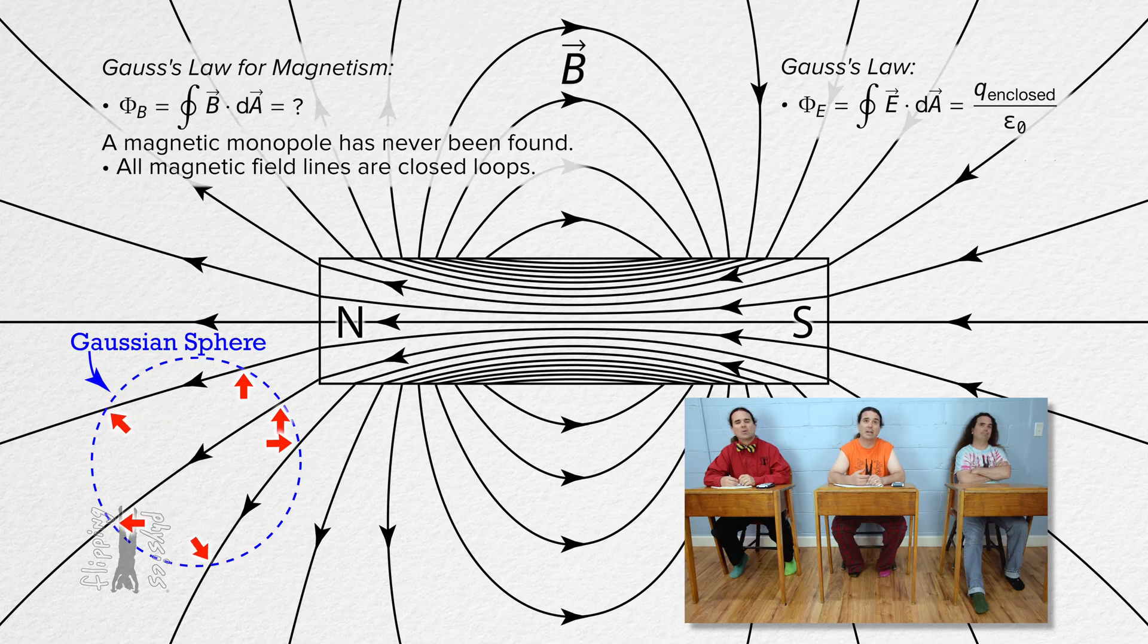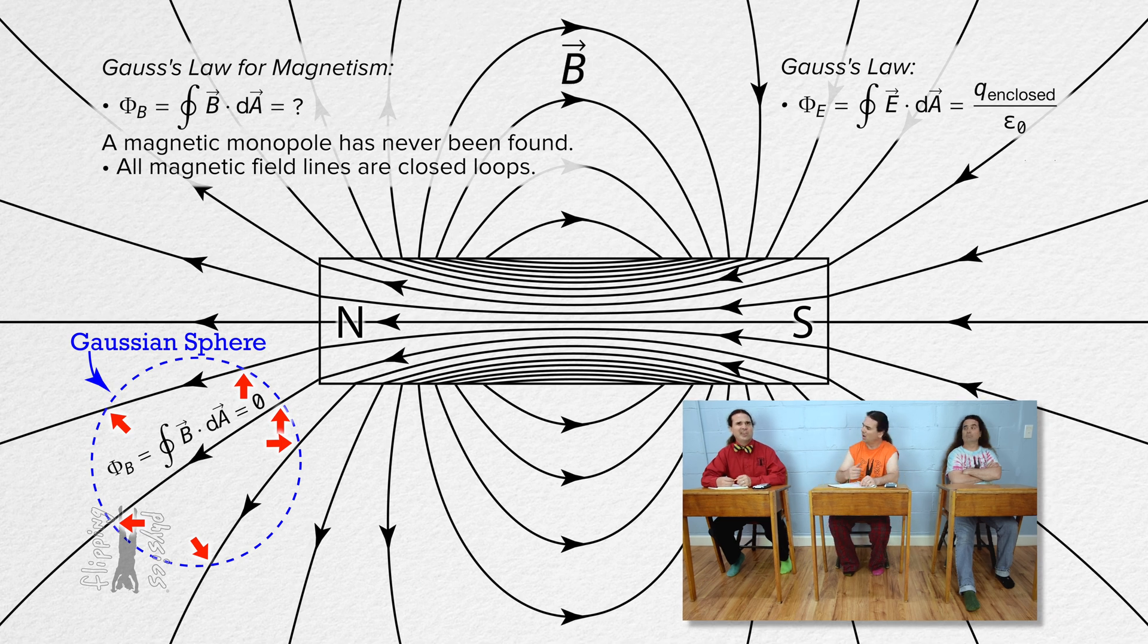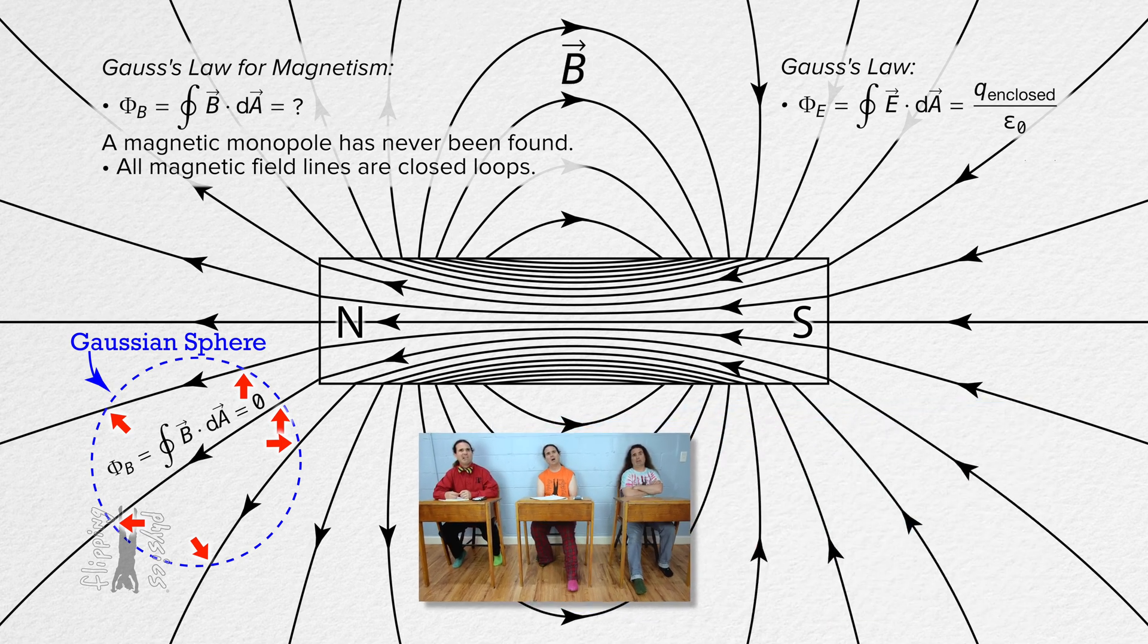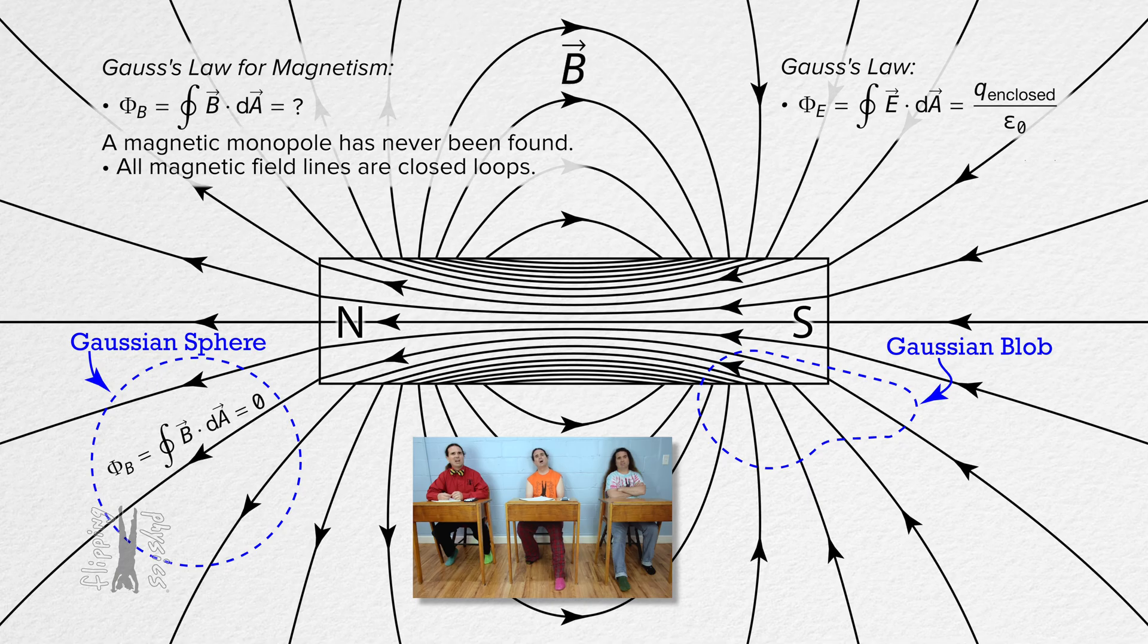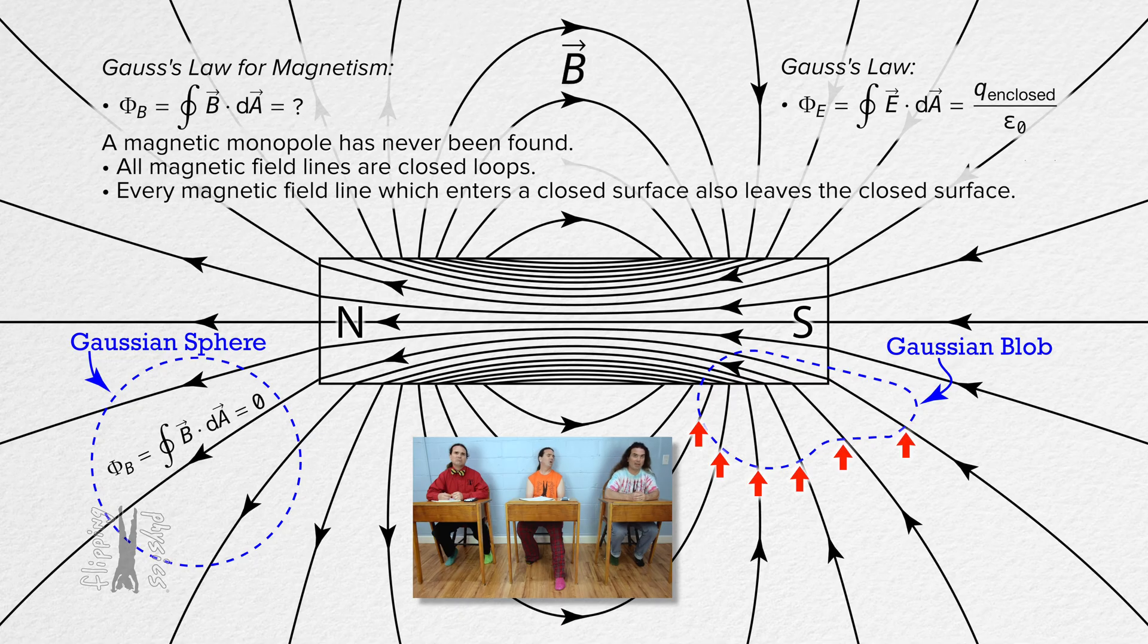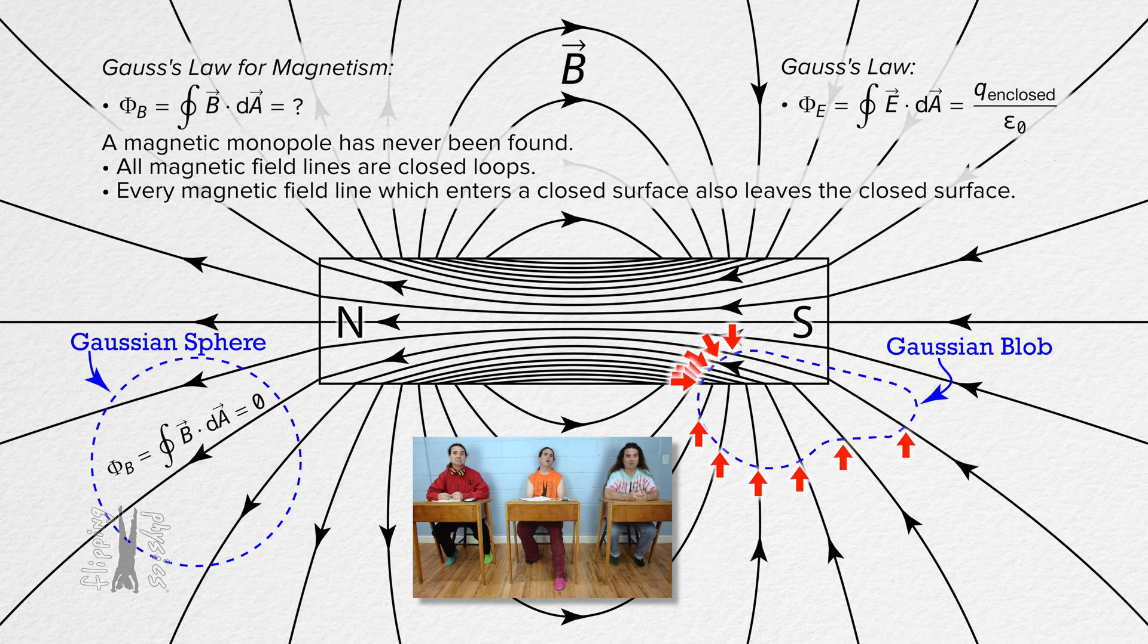So the net magnetic flux through this Gaussian sphere equals zero. Is that always true? If you draw a randomly shaped Gaussian surface, even with part of the Gaussian surface inside the magnetic dipole, you can see that every magnetic field line which goes into the Gaussian surface also comes out of the Gaussian surface.